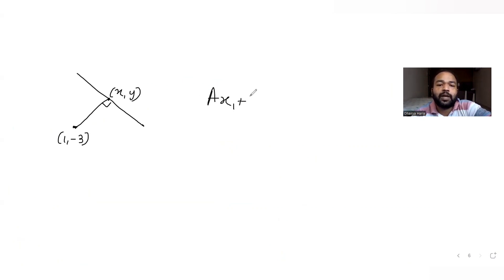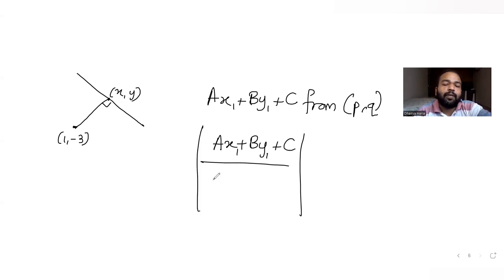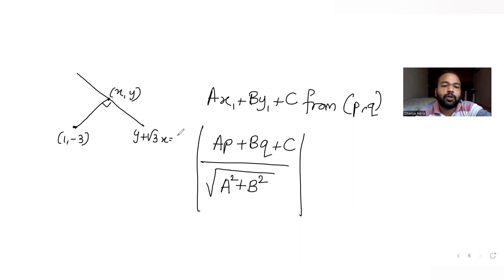We already know that whenever you have a line equation ax + by + c = 0, the perpendicular distance from any point (p, q) to that line is given by |ap + bq + c| divided by sqrt(a² + b²). So here, instead of x1 and y1, we substitute coordinates p and q: it becomes |a·p + b·q + c| upon sqrt(a² + b²). In this question, the line equation is y + √3·x = 0.